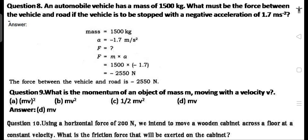Question 8: An automobile vehicle has a mass of 1,500 kg. What must be the force between the vehicle and the road if the vehicle is to be stopped with a negative acceleration of 1.7 m/s²? Answer: F = M × A = 1,500 × (−1.7) = −2,550 N.